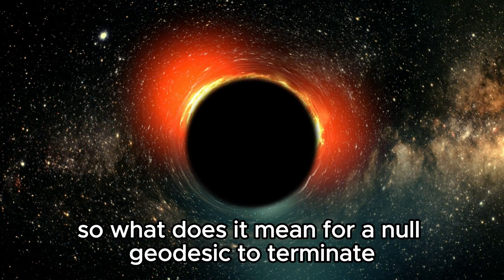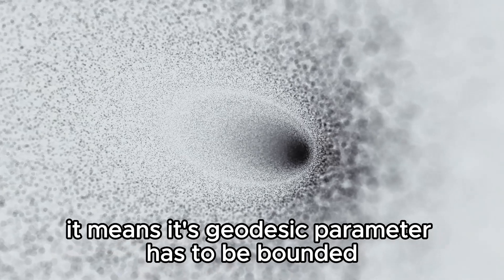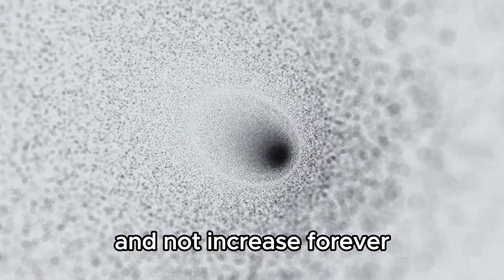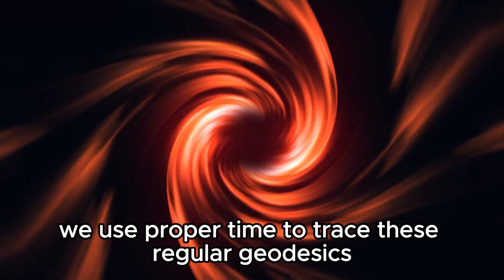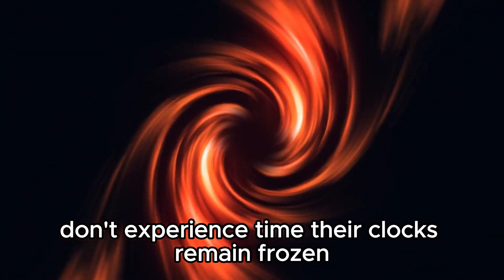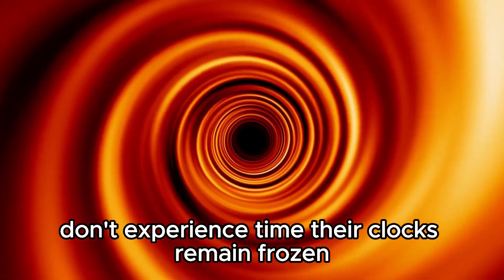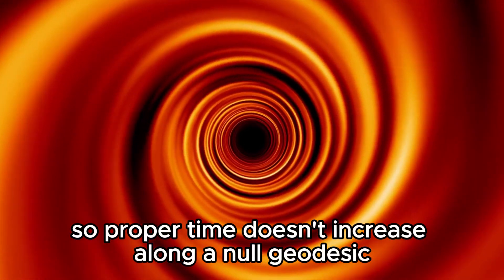Okay, so what does it mean for a null geodesic to terminate? It means its geodesic parameter has to be bounded and not increase forever. In the case of massive particles, we use proper time to trace these regular geodesics, but things traveling at the speed of light don't experience time. Their clocks remain frozen. So proper time doesn't increase along a null geodesic.